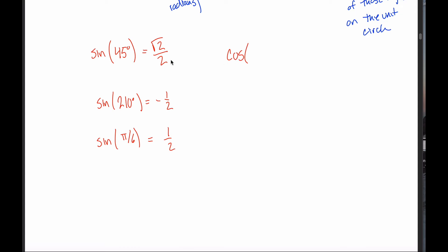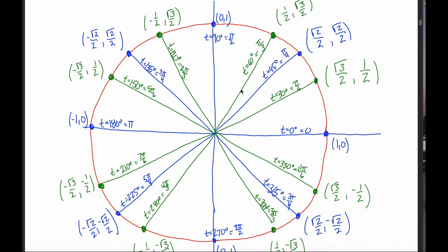But what about cosine? What if I asked you for the cosine of 180 degrees? You refer back to your unit circle and come over to 180 degrees. What you need to know about cosine is cosine always refers to the x-coordinate. So while the sine of 180 degrees would be zero, the cosine of 180 degrees is negative one.